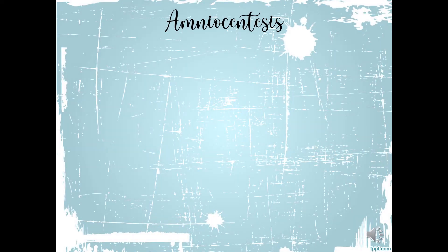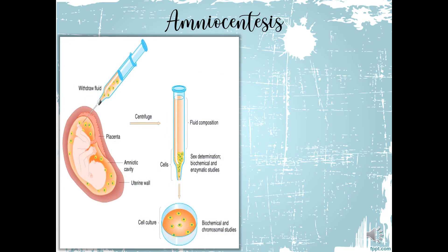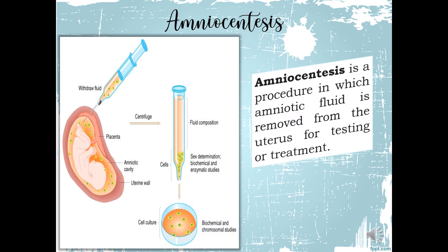Amniocentesis — we have here the image of the process. It is a procedure in which amniotic fluid is removed from the uterus for testing or treatment. Amniotic fluid is a fluid that surrounds and protects a baby during pregnancy. This fluid contains fetal cells and various proteins. During this process, a small amount of amniotic fluid is removed through a fine needle inserted into the uterus through the abdomen under ultrasound guidance. 30 ml is enough.